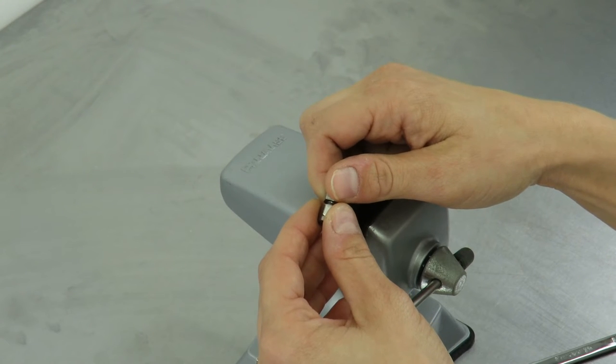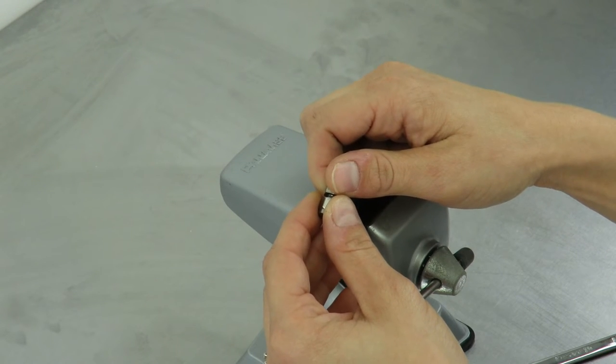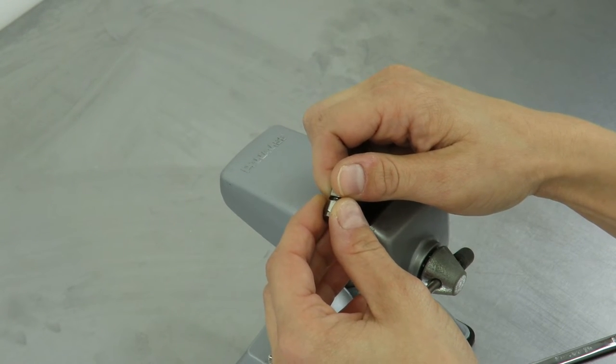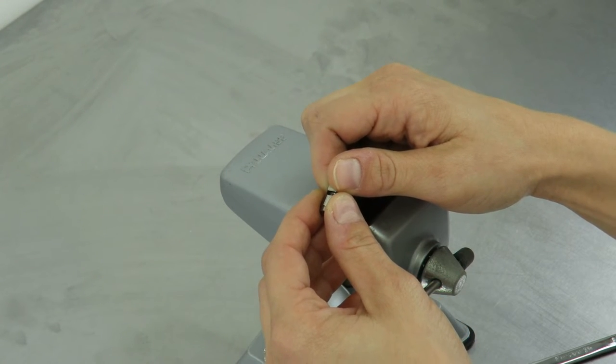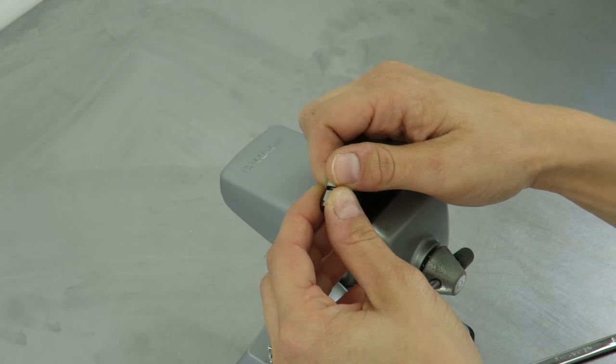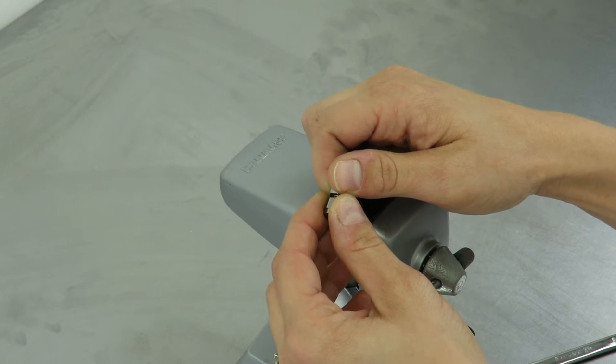Once you have your tubing, ferrule, and fitting, you can make your custom needle. We are using 20 gauge hypodermic tubing with a 1/16th inch adapter ferrule and a luer to 1/16th inch compression fitting to make a custom length 20 gauge needle.